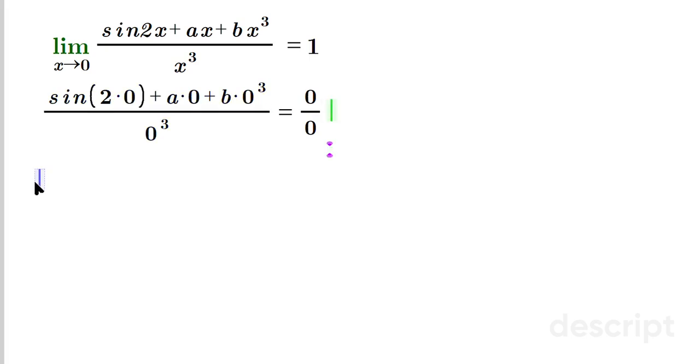What we can do is differentiate. The limit as x approaches 0, and then we have 2 cosine 2x by the chain rule on the first one, plus just a because the x goes away, plus 3bx squared. In the bottom by L'Hôpital's we're gonna have 3x squared. This is equal to 1.